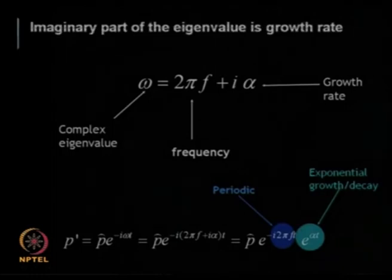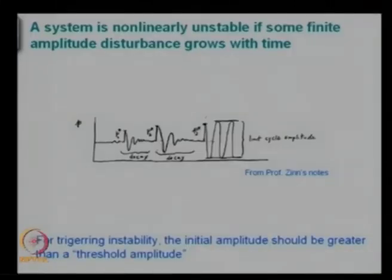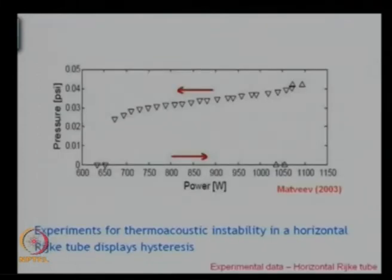We are going to look at those systems — why linear stability theory fails to account for it and how you can deal with it. At the moment with normal modal analysis, we look at the imaginary part of the eigenvalue, call it growth rate. If it is positive we worry about it; if it is negative we sleep in peace. But we have to face this non-linear instability. The system is non-linearly unstable if some finite amplitude disturbance — not necessarily all amplitudes — causes growth. Linear stability means any amplitude, even arbitrarily small, will still grow. The general idea was that for triggering instability, the disturbance amplitude should be greater than a threshold amplitude.